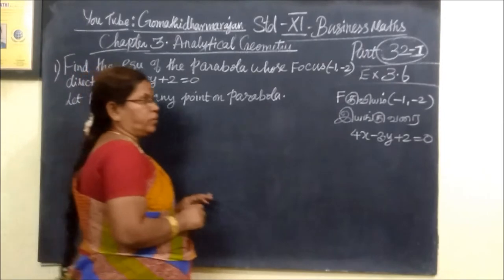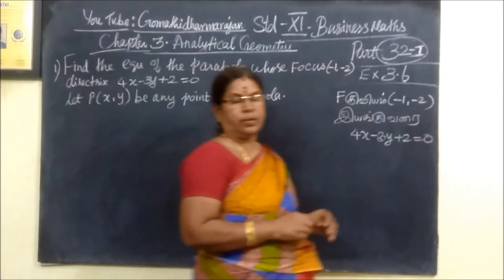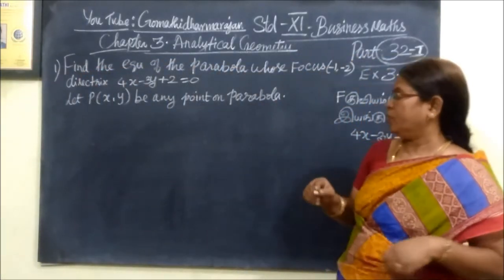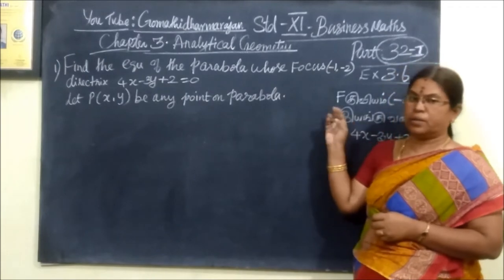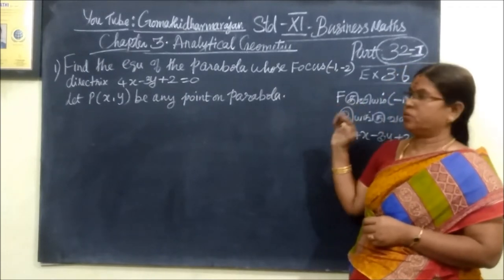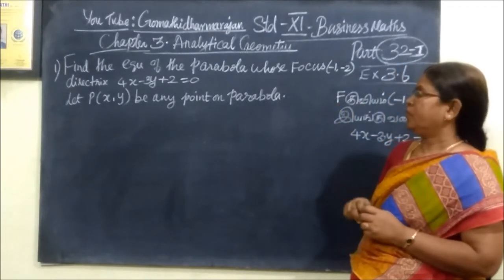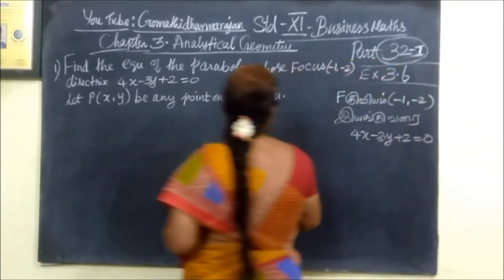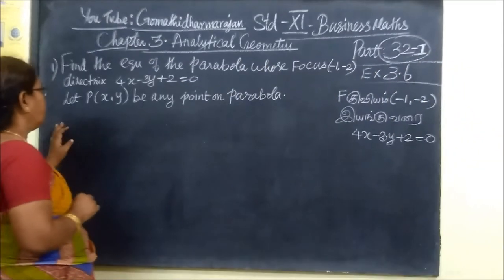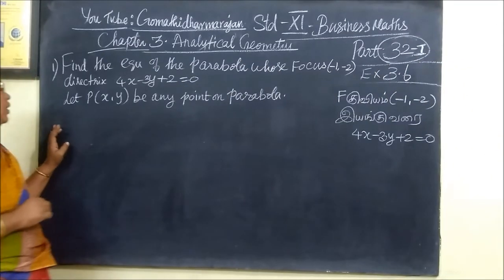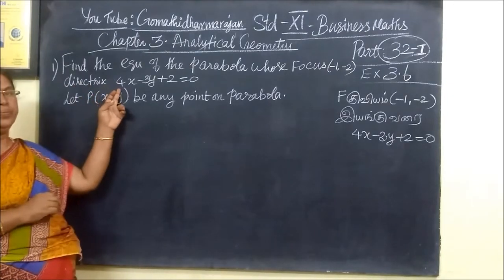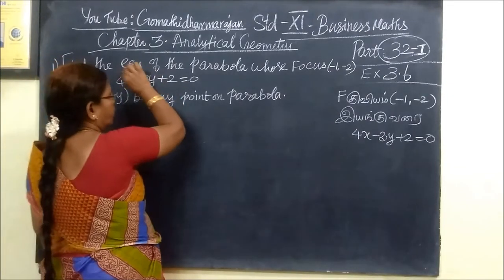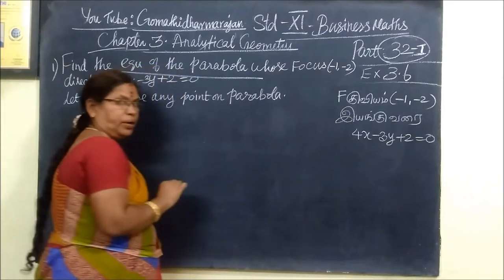So now we want to see Exercise 3.6, business math. Business math level, Exercise 3.6, question number 1: find the equation of the parabola whose focus is minus 1, minus 2. Then the directrix is given. We want to find the equation of the parabola.